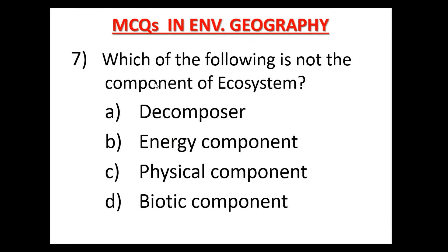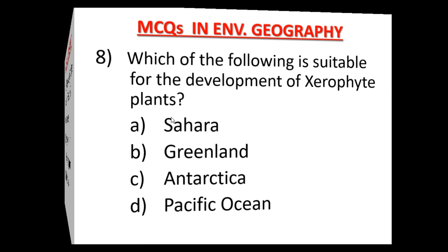Question number 7: Which of the following is NOT a component of ecosystem? पारिस्थितिकी तंत्र का कौन सा component नहीं है? Option A: Decomposer, Option B: Energy component, Option C: Physical component, Option D: Biotic component. Option A — Decomposer is not a component of ecosystem. Option A is the correct answer.